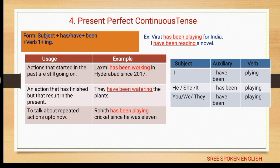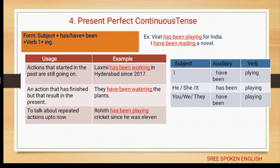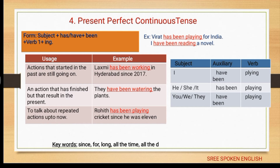The present perfect continuous tense is used for actions that started in the past and are still going on: 'Laxmi has been working in Hyderabad since 2017'. For an action that has finished but whose result is in the present: 'they have been watering the plants'. For repeated actions up to now: 'Rohit has been playing cricket since he was 11.' Keywords: since, for, all the time, all the day, all the week.